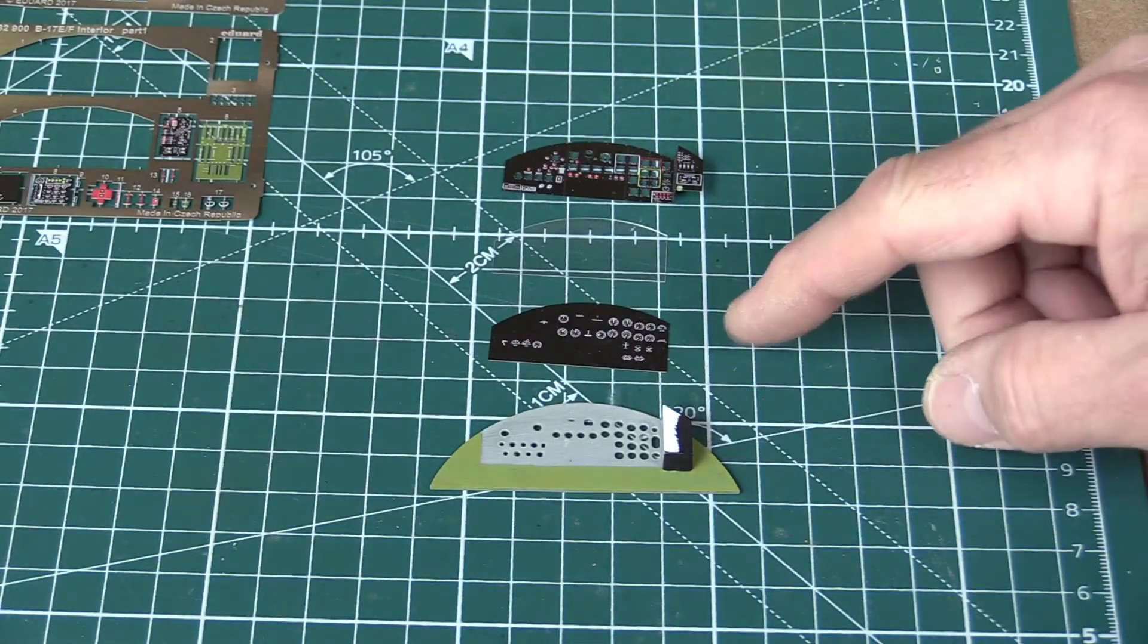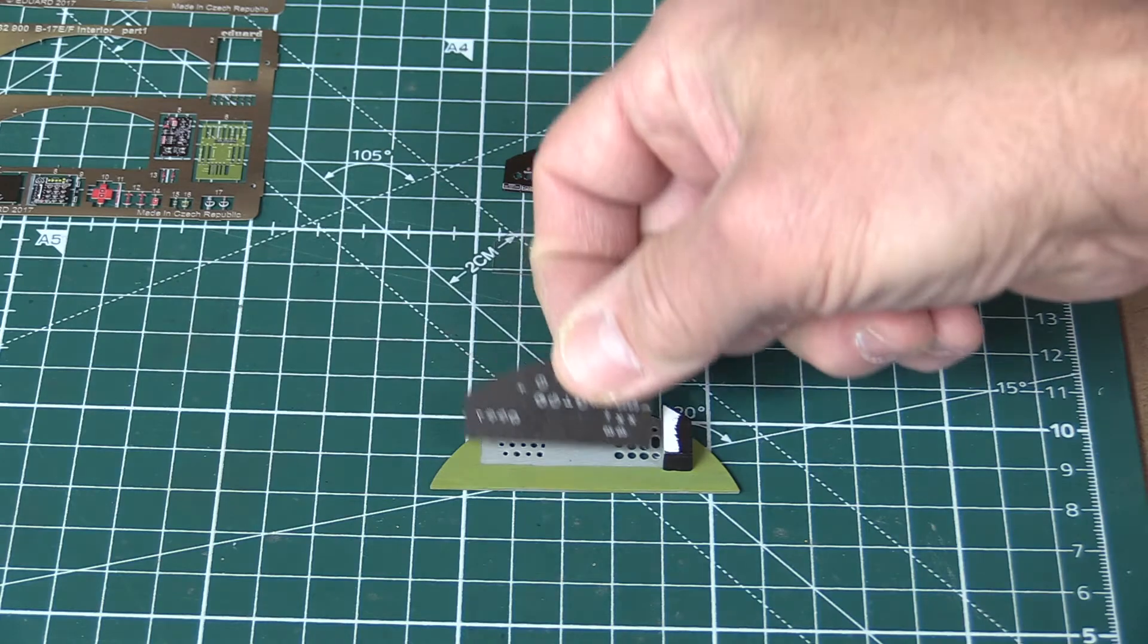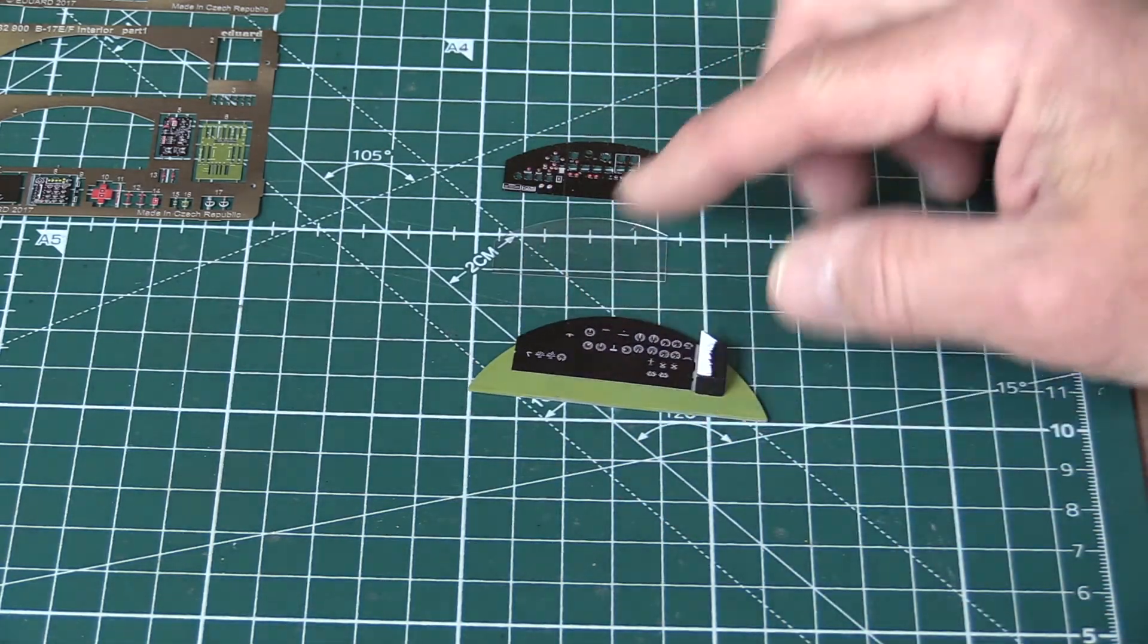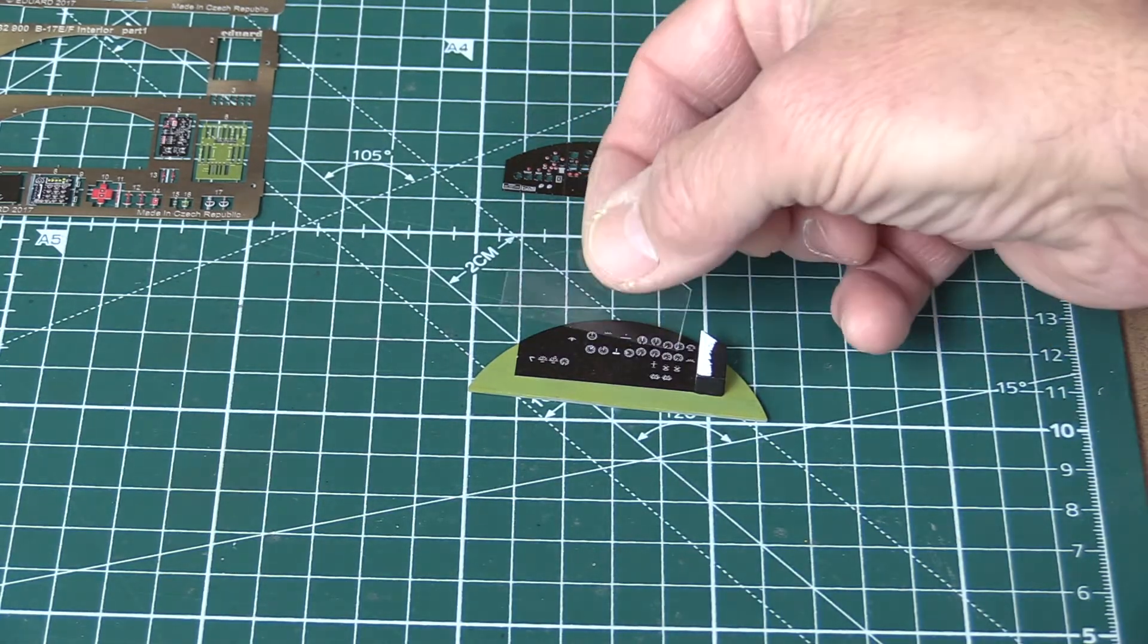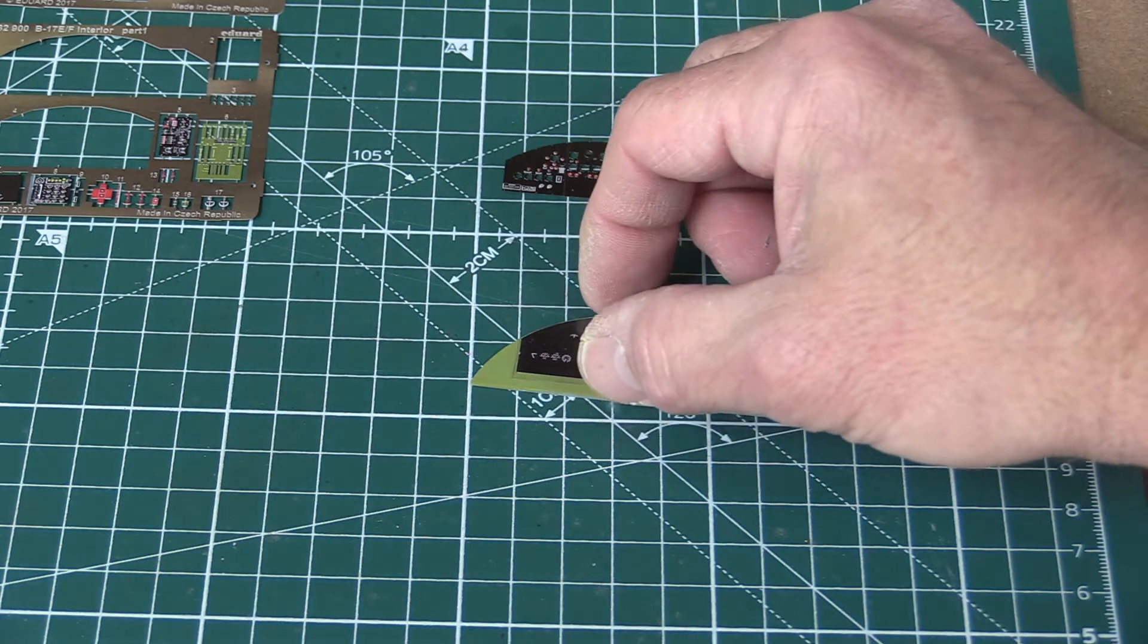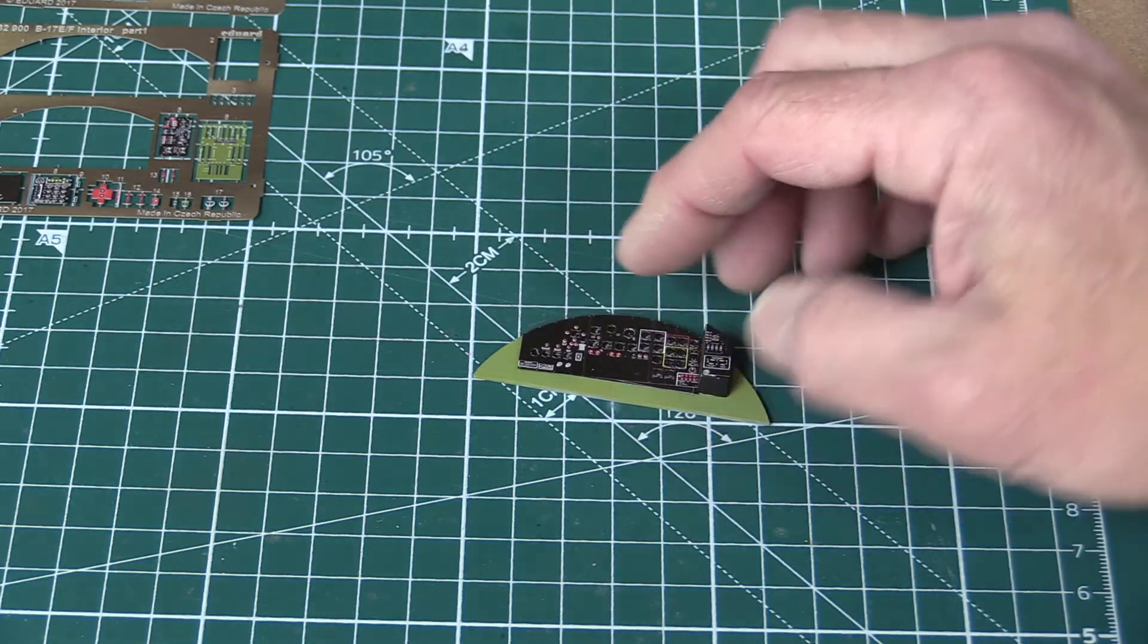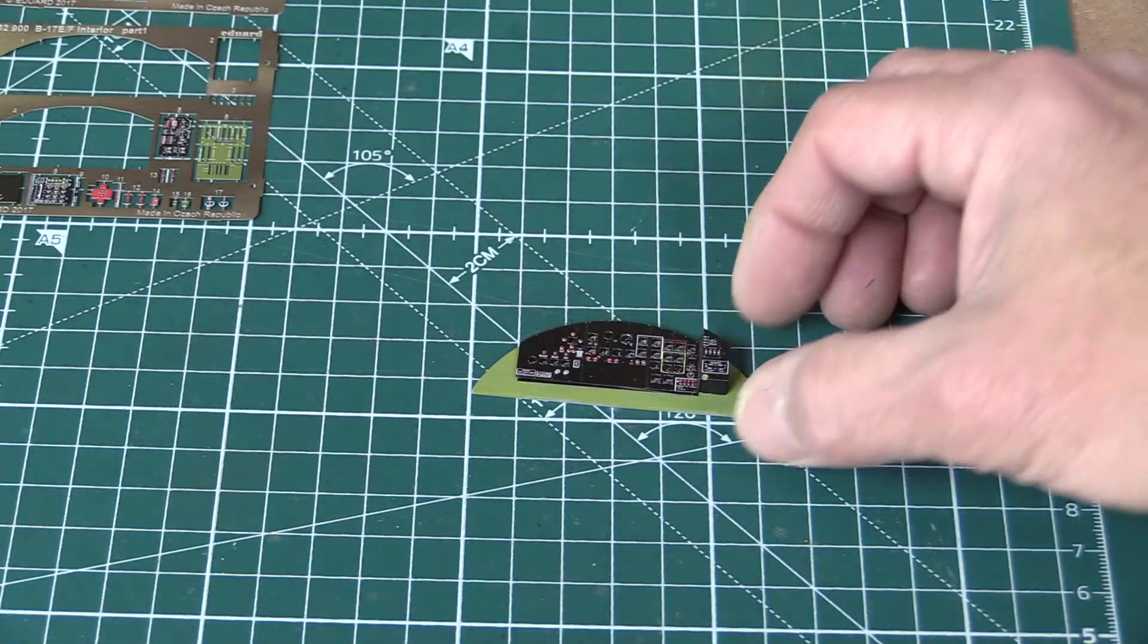Here we have the instrument panel, the instruments, a clear sheet, and the overlay instrument panel. I'm going to lay these pieces out, first the instruments on top of the panel, the kit panel, then the clear sheet which represents the glass dials, and then the actual instrument panel over top. So we sandwich the clear piece between the instruments and the actual instrument panel.